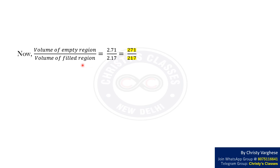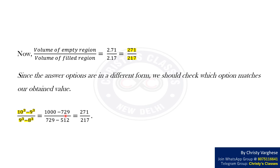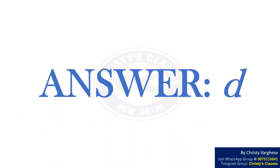Now, volume of the empty region divided by volume of the filled region equals 2.71 / 2.17. Since the answer options are in a different form, we check which option matches. Option d: (10³ − 9³) / (9³ − 8³) = (1000 − 729) / (729 − 512) = 271 / 217 = 2.71 / 2.17. Hence, option D is the right answer.